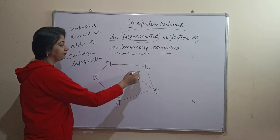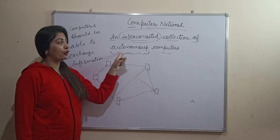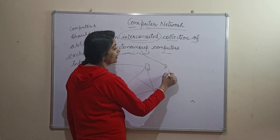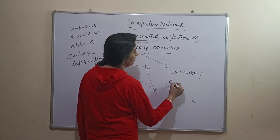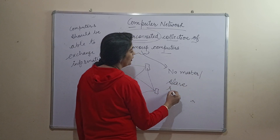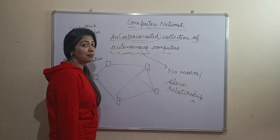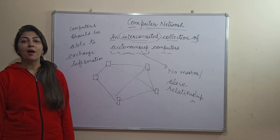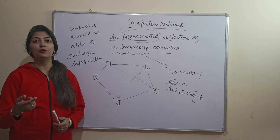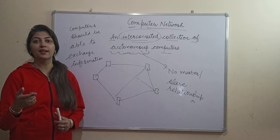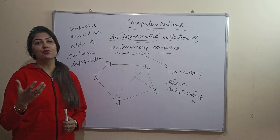We need to connect with them, but the computers should be autonomous. What is the meaning of autonomous? It means there should not be any master-slave relationship among the computers. The computers should be independent — that means one computer cannot start or stop another computer. No master-slave relationship; each computer should be independent.